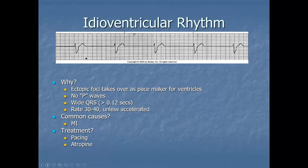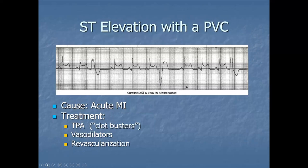Idioventricular rhythm: an ectopic focus takes over as pacemaker for the ventricles. No P waves, slow rate of 30 to 40, widened QRS — strongly suggesting the Purkinje network has taken over. This is another example of a sick heart. Common cause is MI; treatment is pacing and atropine; these patients are almost universally symptomatic. ST elevation with PVCs indicates a STEMI — you can see multiple PVCs on the strips, and where there are no PVCs, you see the ST elevation characteristic of MI.